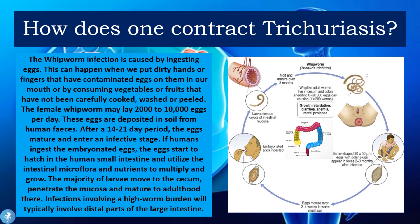After a 14 to 21 day period, the eggs mature and enter the infective stage. If humans ingest the embryonated eggs, these eggs start to hatch in the human small intestine and utilize the intestinal microflora and nutrients to multiply and grow. The majority of larvae then move into the cecum and penetrate the mucosa, maturing into adulthood. Infections involving a high worm burden will typically involve distal parts of the large intestine.